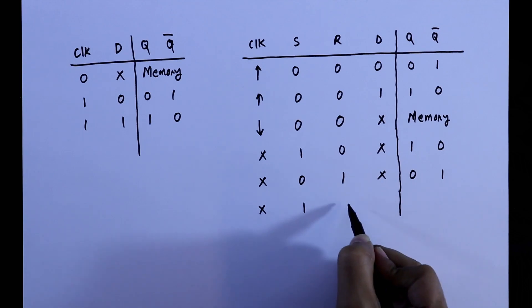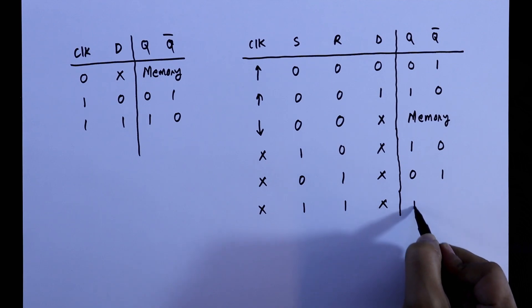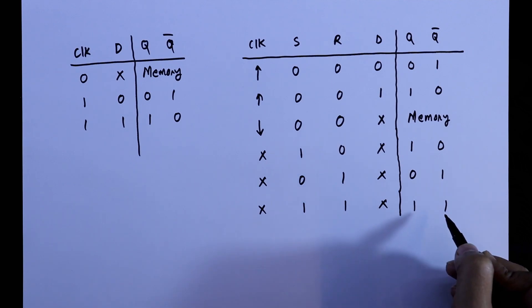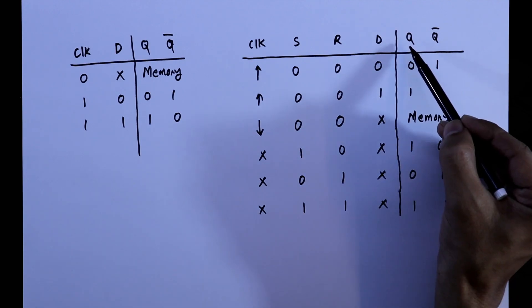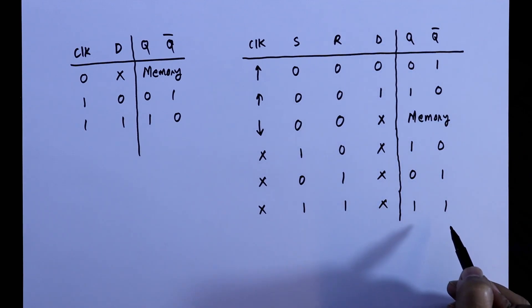If set and reset 1, then it doesn't matter whether D is 1 or 0, both will be 1. But this thing is theoretically not possible, but practically possible. Q and Q bar is complement to each other, but here practically we are getting this.